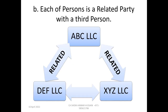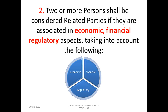In point (b) of Clause 1, they say each of the persons is a related party with a third person. For example, ABC Company is related with DEF LLC, and ABC Company is also related with XYZ Company — in that case, DEF and XYZ will also be treated as related parties. Now we move to Clause number 2.